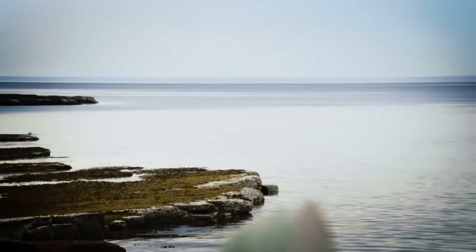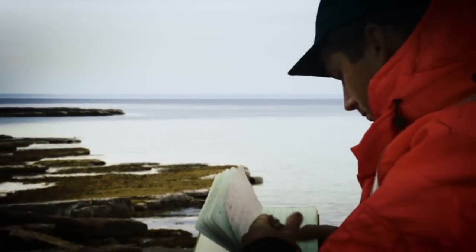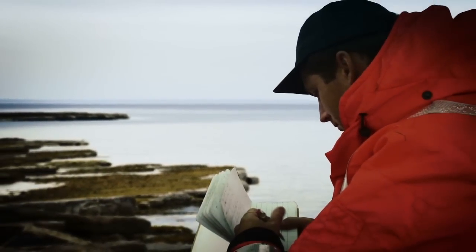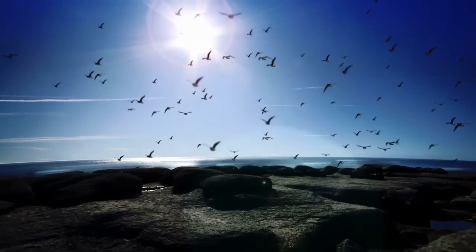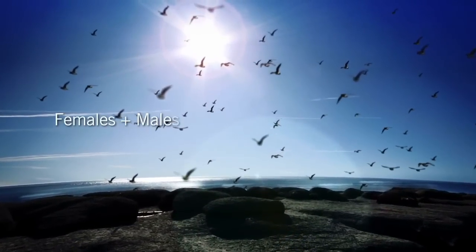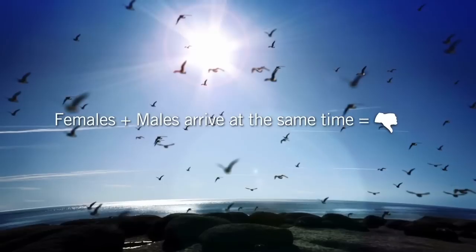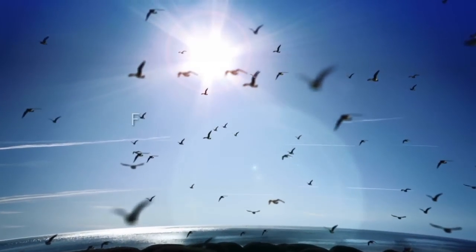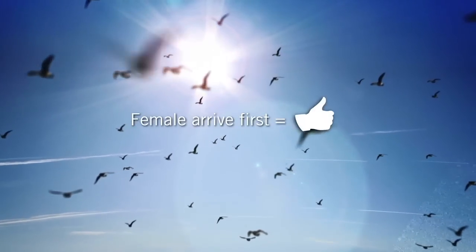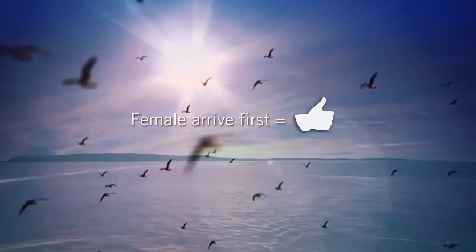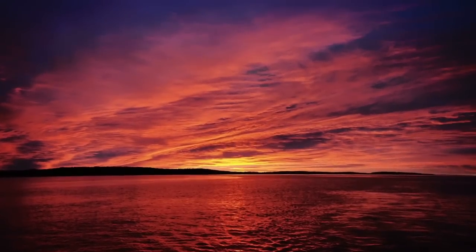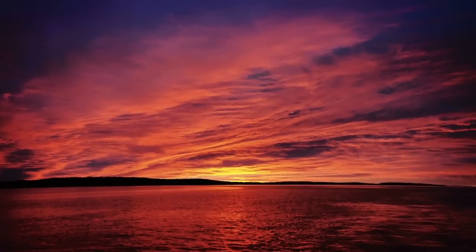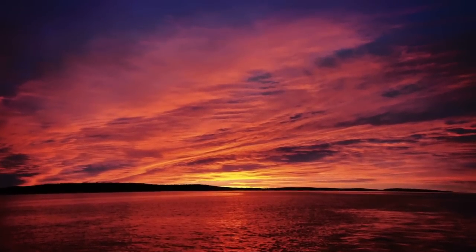Whenever a bird bearing an identification flag is spotted, scientists scour existing records to determine the sex of the bird. The arrival of both males and females around the same time in the Mingan Archipelago is an indicator of a poor reproductive year for the Red Knot Rufa. However, when females arrive first to be followed by the males three weeks later, this indicates a good reproductive year. Such occurrences gives us hope that the Red Knot Rufa population will recover one day.